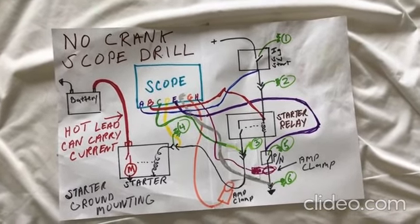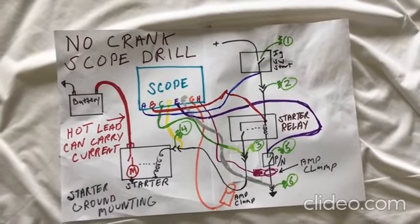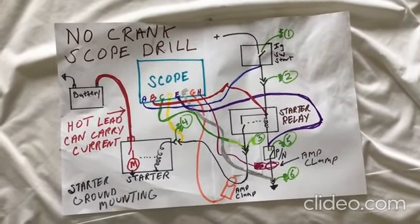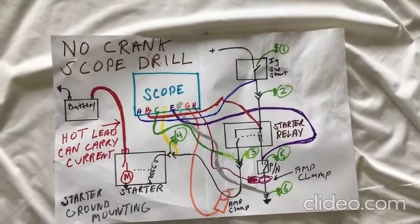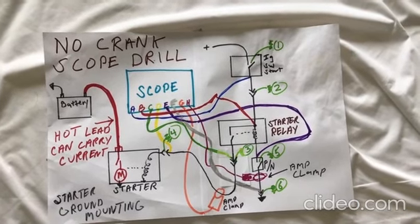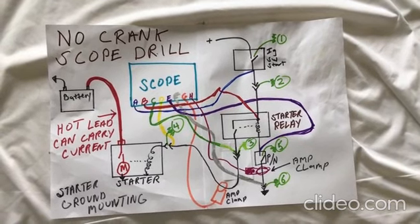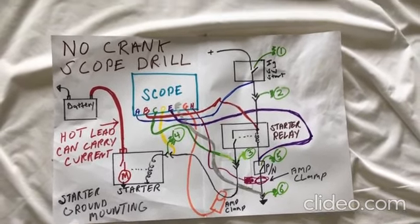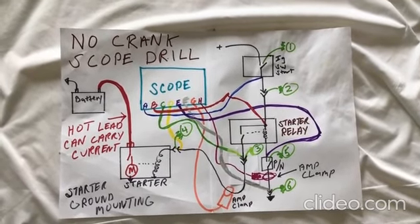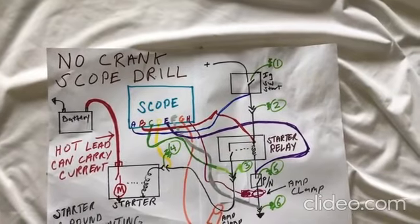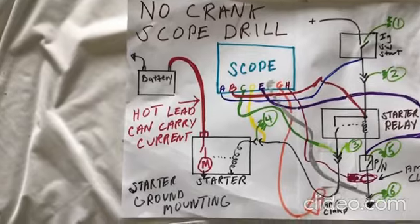First of all, I'm going to show you a normal cranking vehicle where all the signals are good. We are on eight channels. Channel A, as you can see, is the output of our ignition switch, the start pole on our ignition switch. Channel B, red, is the input on the power side of our starter relay. Channel C, green, is at a connector on the outside of our starter — the latching output of our starter relay between the starter relay and the starting motor. Channel D, yellow, is back probed into the connector at the starter solenoid right there.